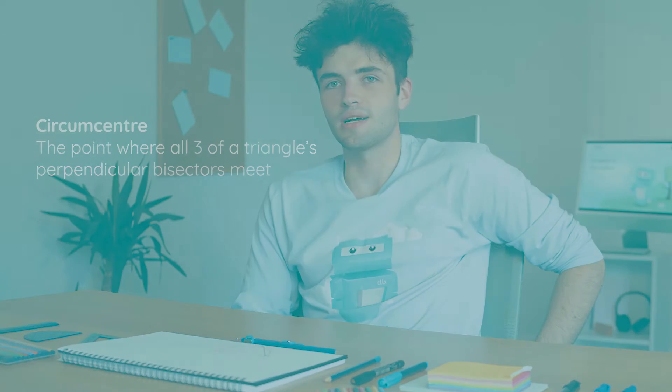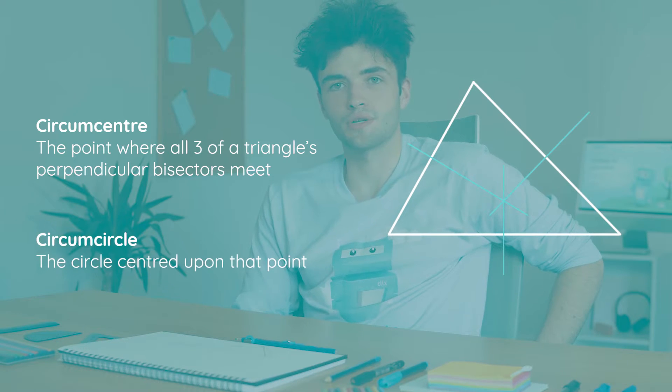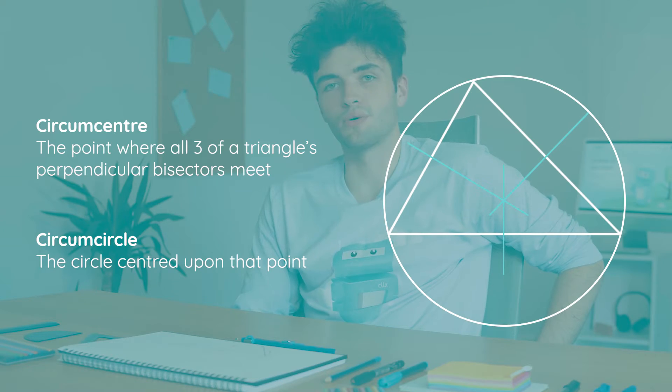Okay, so just in case you're wondering what a circumcentre actually is, a circumcentre is just the point at which all three of our triangle's perpendicular bisectors meet. And a circumcircle is just a circle that is centred upon that point. So let's see how it's done.